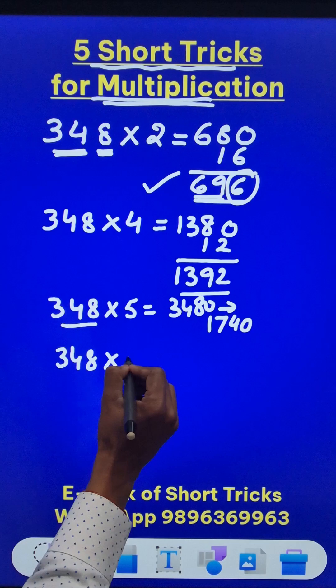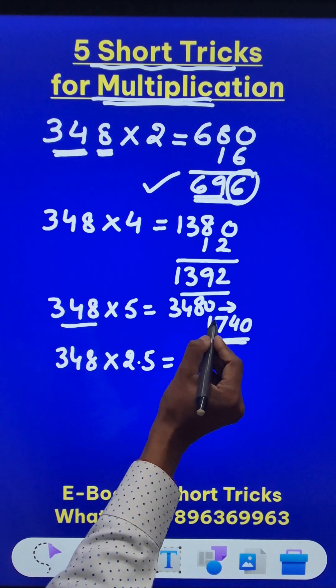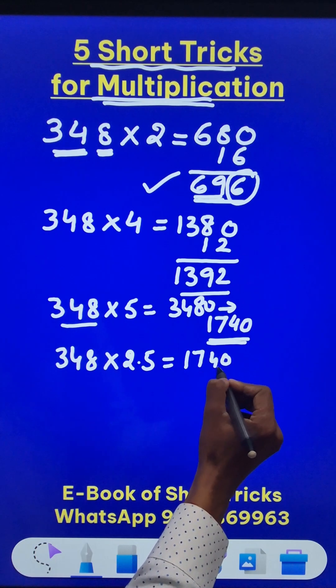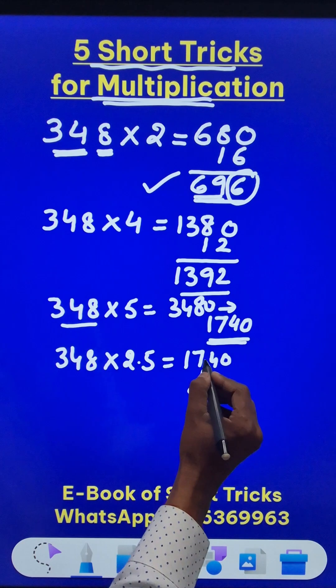Likewise, 348 when multiplied by 2.5. So you already divided it by 2 and got 1740. Once again, this 1740 is to be divided by 2 to get the final answer and that will be 870.